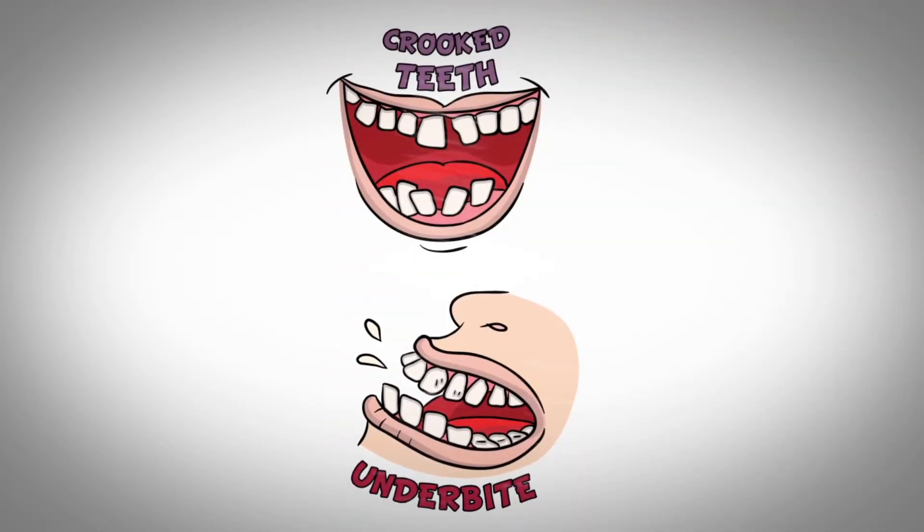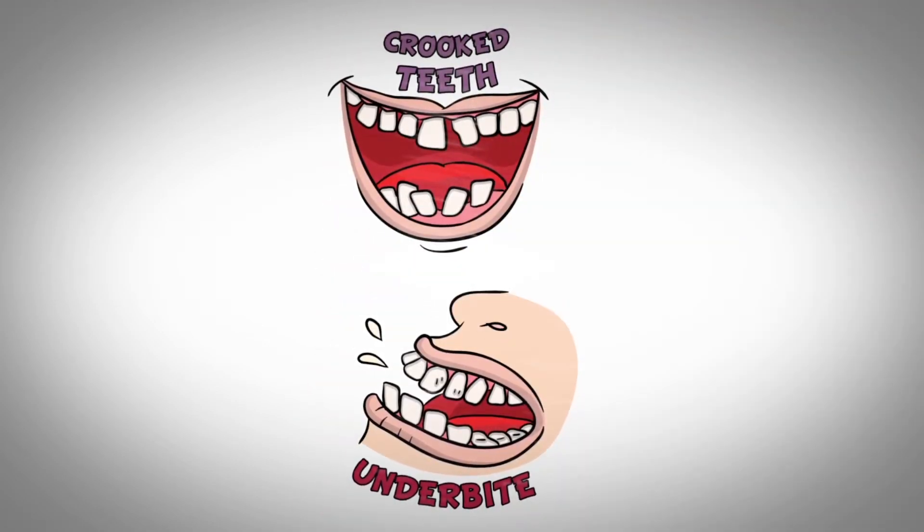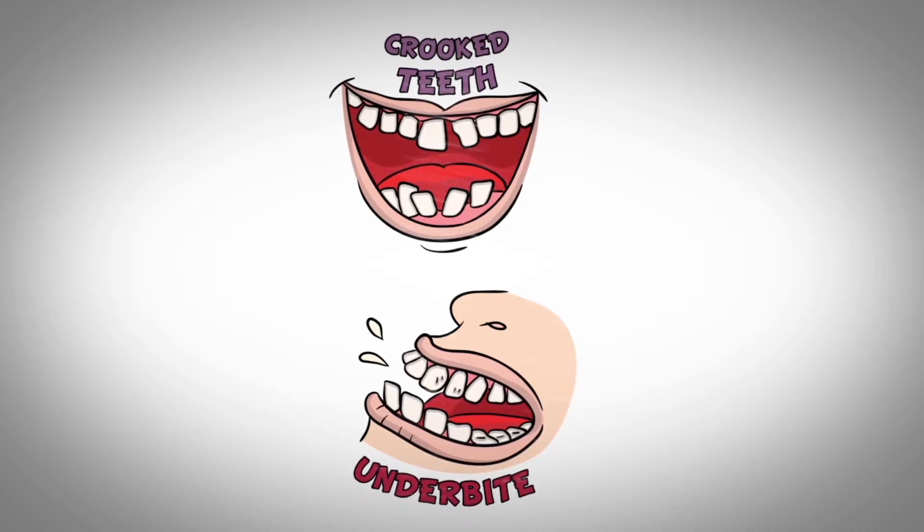Common inherited orthodontic problems found in children are crooked teeth, crossbite, large overbites, underbites, and jaw growth issues.